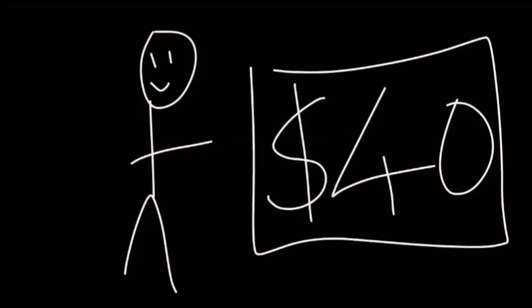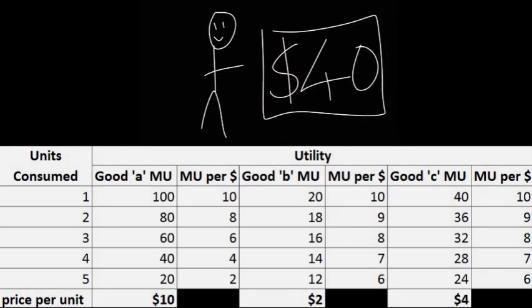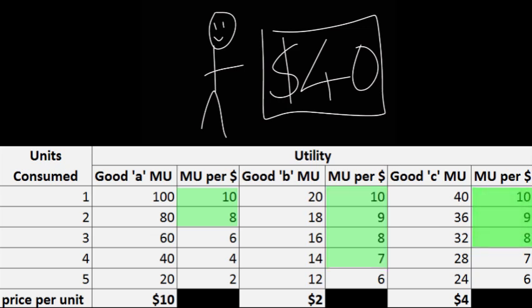Now let's do an example. This is Jim. Jim has $40 to spend on three different goods. Each good gives the same marginal utility per dollar on the first row, so Jim will purchase one of each. The next best marginal utility per dollar is good B and good C, so Jim will get them. Jim continues this process until all of his income is spent. In the end, Jim got two units of good A, four units of good B, and three units of good C. By doing this, Jim has maximized his total utility per dollar by using the Equal Marginal Rule.